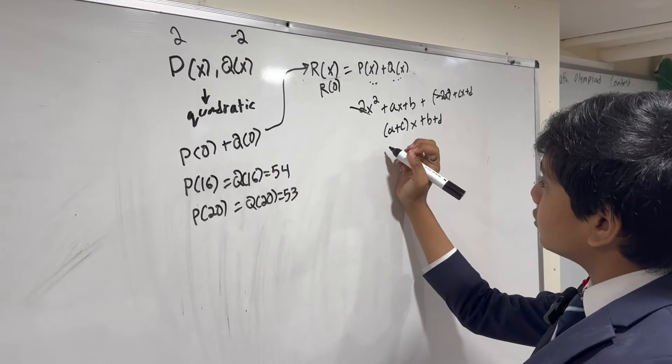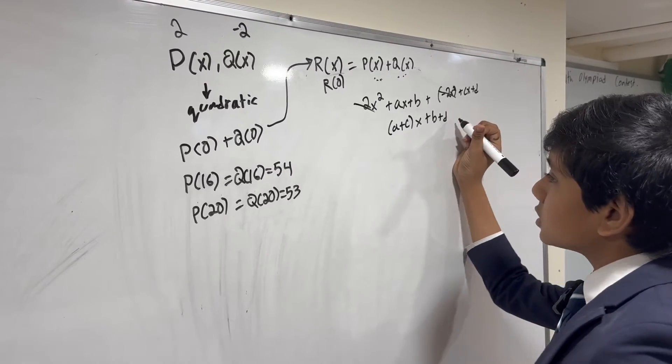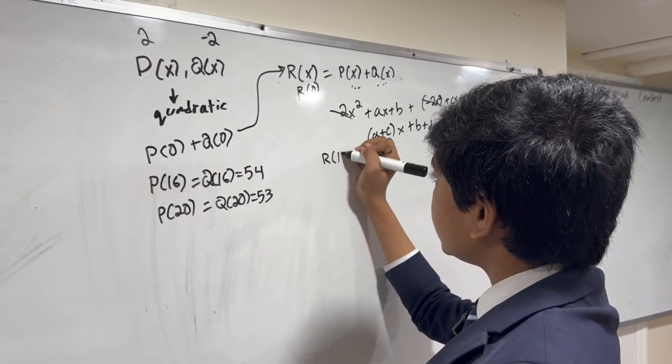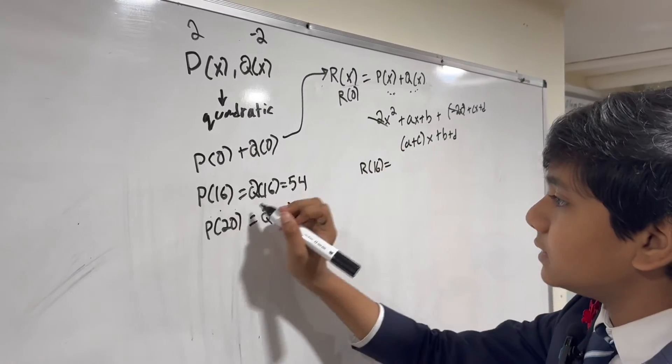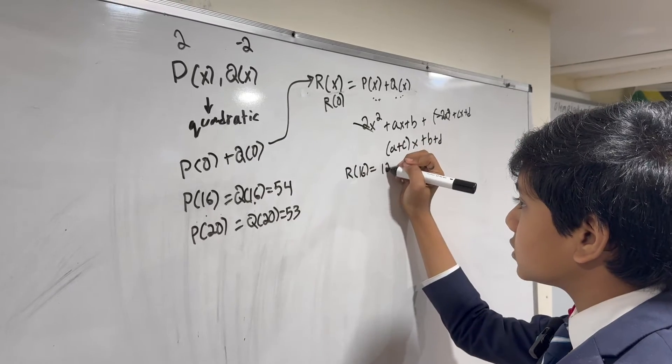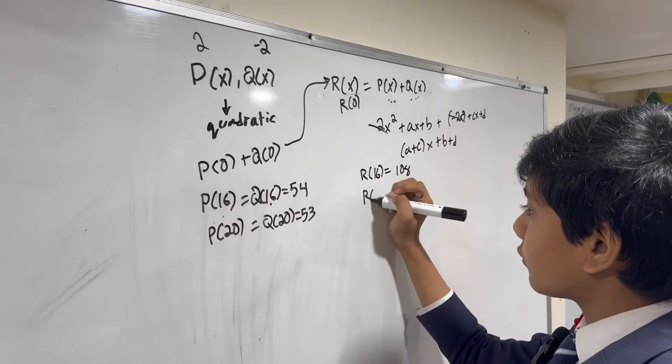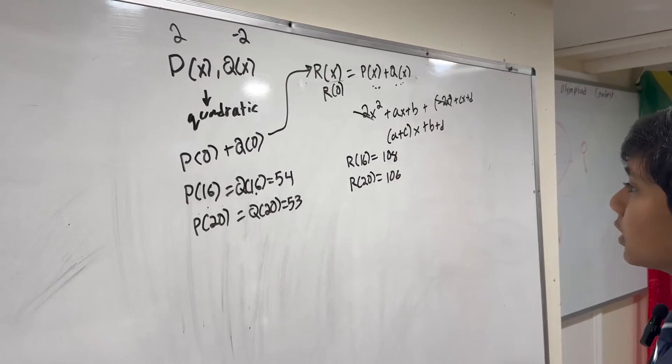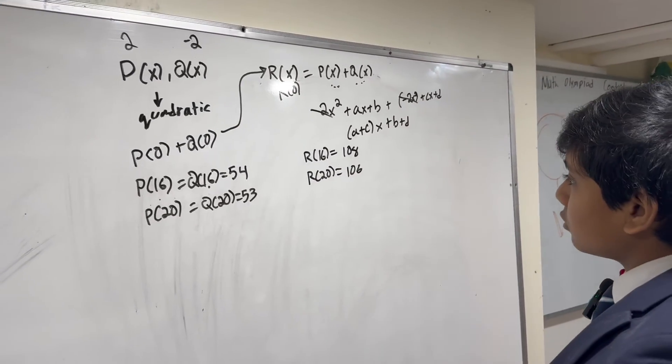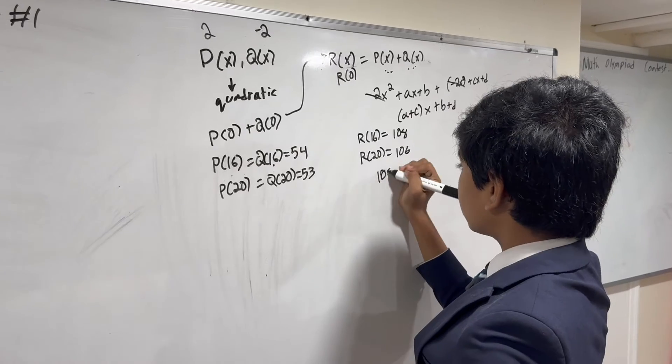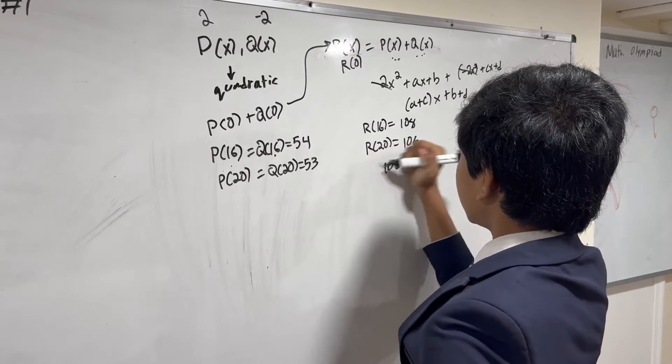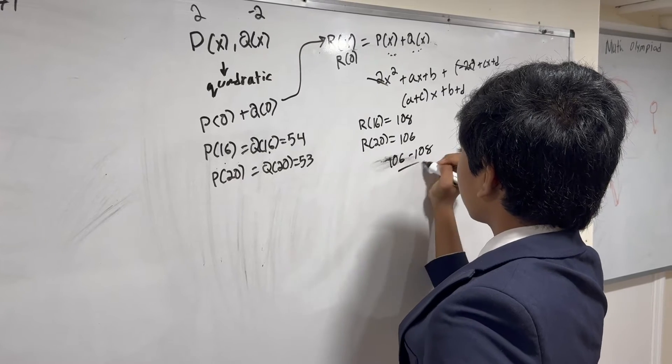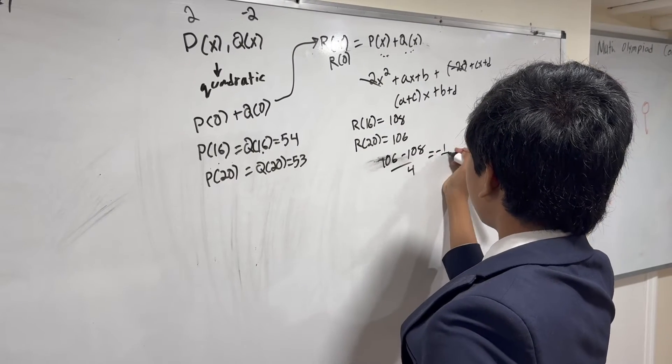So now, all we have to do is find its slope. We know that R of 16 is equal to P of 16 plus Q of 16, which is just 108, and R of 20 is going to be found a similar way to be 106. So now, that means that its slope is 106 minus 108 over 4, which makes its slope minus 1 half.